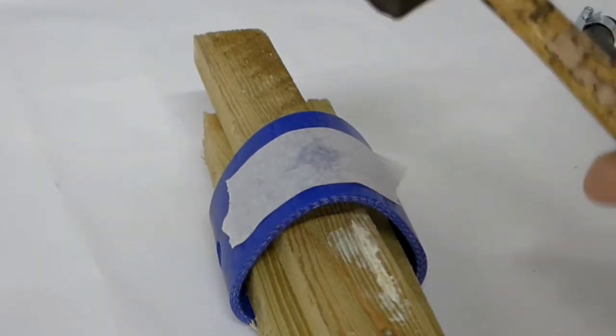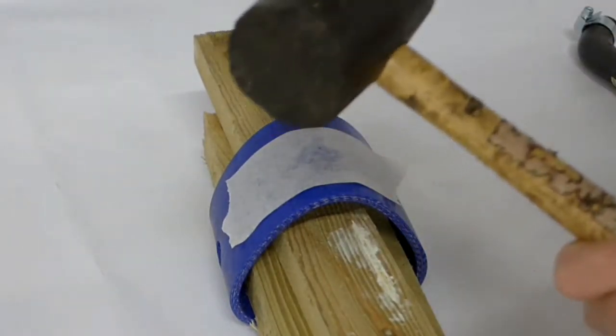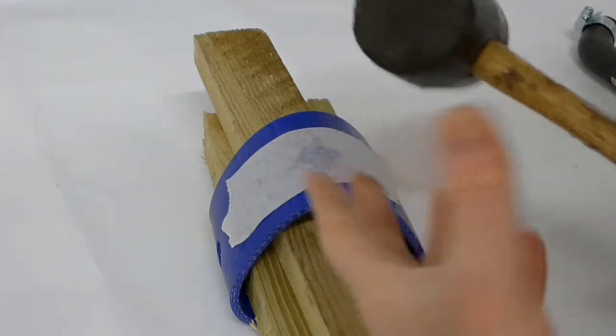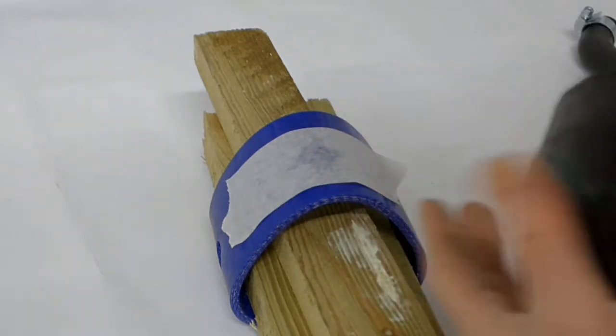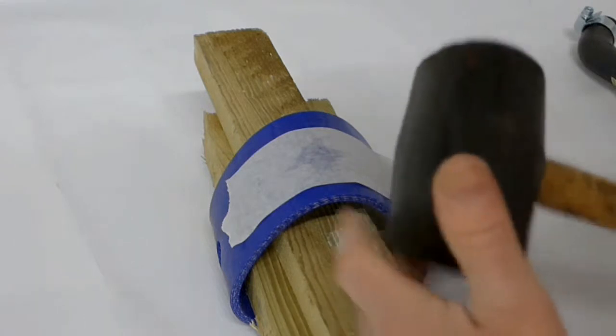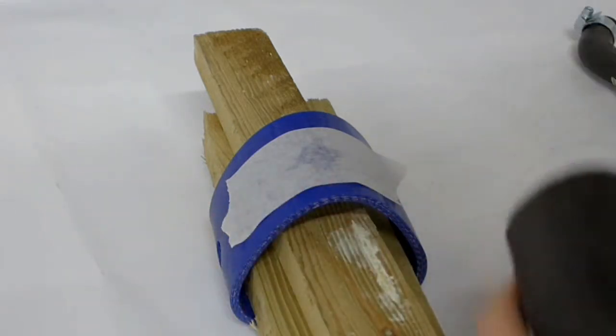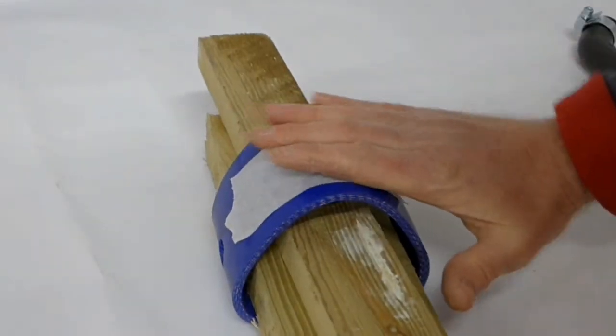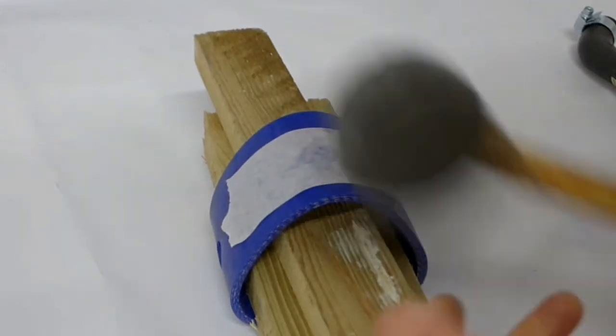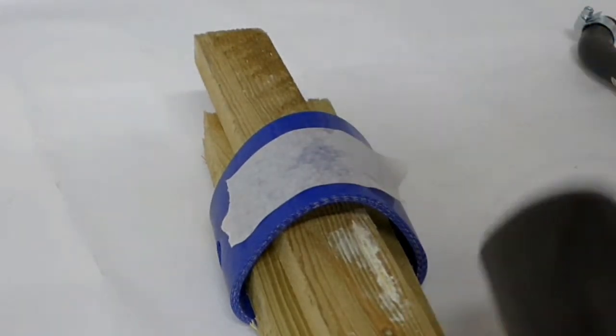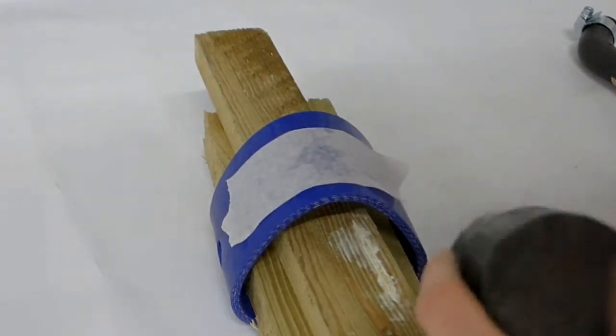Now preferably a rubber hammer such as this is what you're looking to use. If you really don't have one, you could use a piece of wood again with a metal hammer, but soft is better. Even another old piece of the hose would be better to put on top if you really had to.